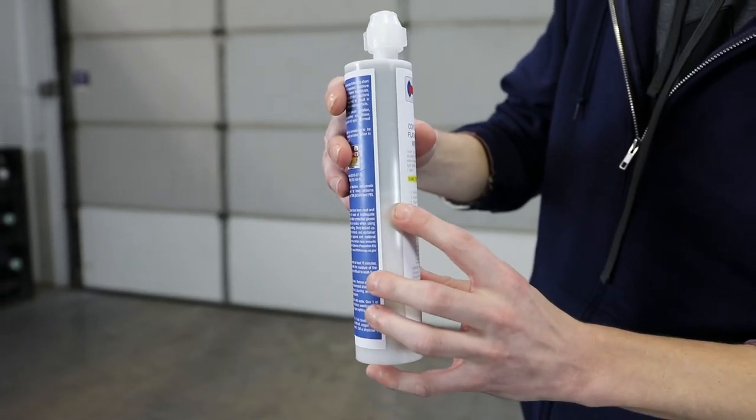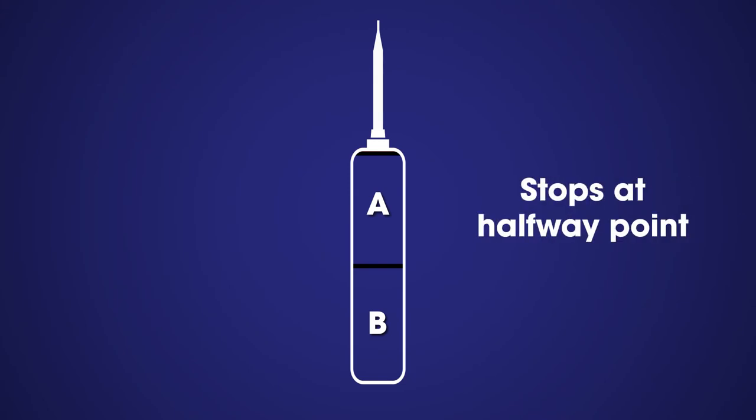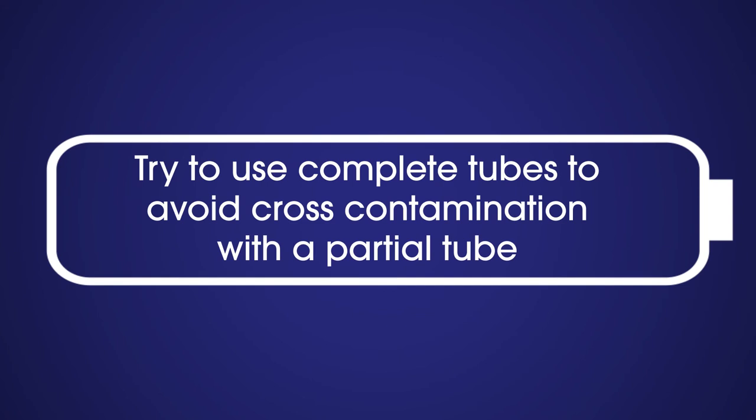Single tubes have two chambers of material that dispense side by side. Parts A and B mix in the mixer while injecting. It is normal for the caulk gun to stop when the rear plunger meets the halfway divider. You have simultaneously dispensed both chambers of material. Try to use complete tubes before stopping to avoid cross-contamination with a partial tube.